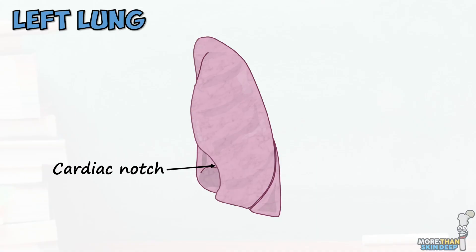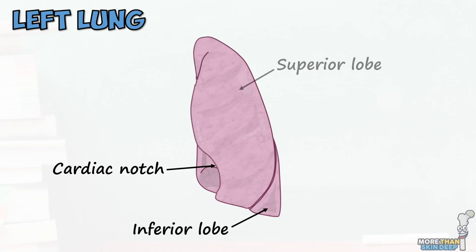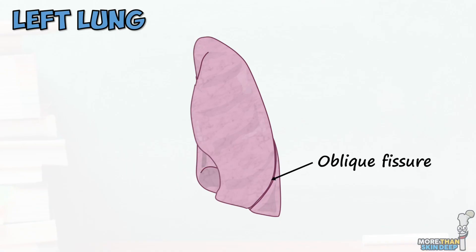Like the right lung, the inferior lobe of the left lung is the largest. It's separated from the smaller superior lobe by the oblique fissure. Like the oblique fissure of the right lung, the left oblique fissure starts midway across the inferior border of the left lung and passes superiorly and posteriorly.